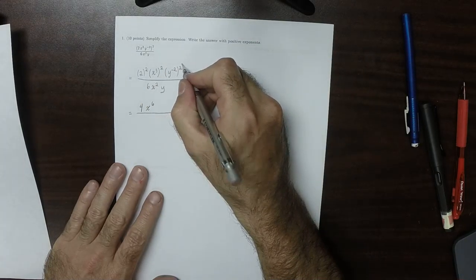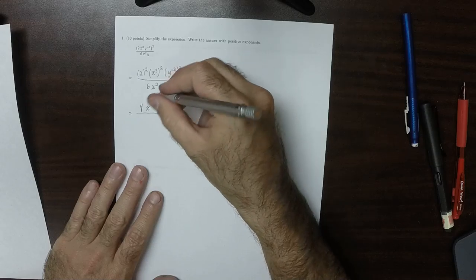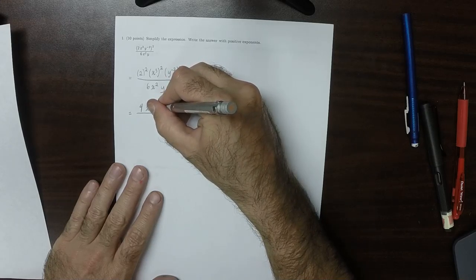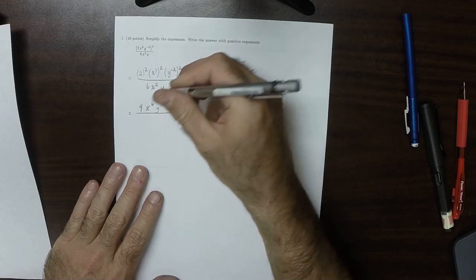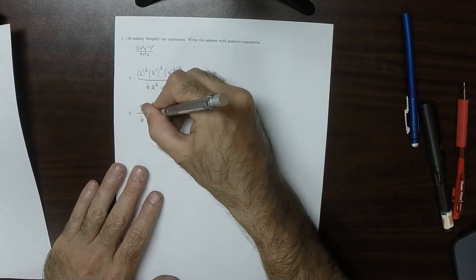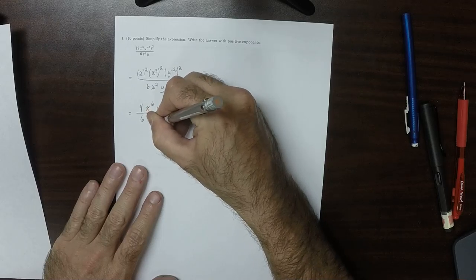and y to negative 2 to 2. So the product of negative 2 and 2 is negative 4. So y to negative 4. And then 6x squared y.